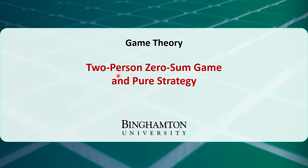In this video, I will talk about two-person zero-sum games and pure strategies. In a previous video titled Decision Trees and Decision Making Under Uncertainty, we assumed a single decision maker chooses the optimal strategy without reference to the effect of decisions of others. In many business situations, there are usually more than one decision maker. The decision made by one decision maker would affect how other decision makers react. We can use game theory to make decisions in cases where two or more decision makers have conflicting or common interests.